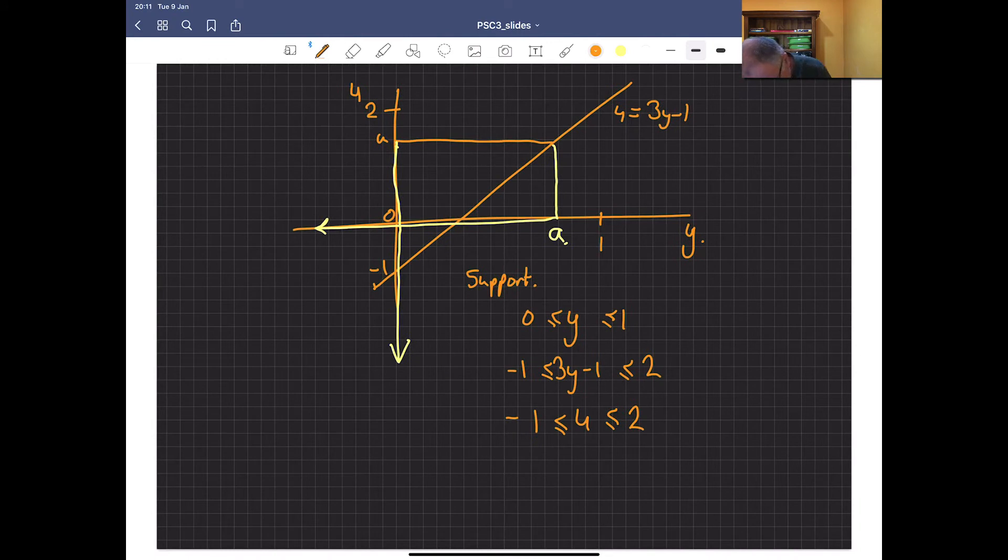Remember back in this diagram here, I said, what is A? Well, now we know that A actually equals U plus 1 over 3. We want to work out the probability that Y is less than or equal to that.